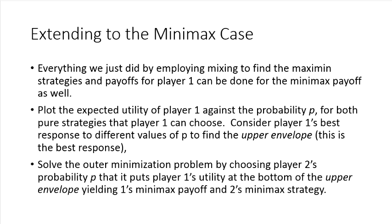Then what we do is we solve the outer minimization problem from player two's perspective by then choosing the probability P that puts player one's utility at the minimum value along that upper envelope. And this would yield player one's minimax payoff by finding player two's minimax strategy. I hope that clarifies any confusion and happy hunting.